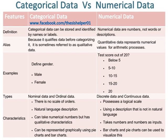Types of categorical data are nominal data and ordinal data, whereas types of numerical data are discrete data and continuous data.